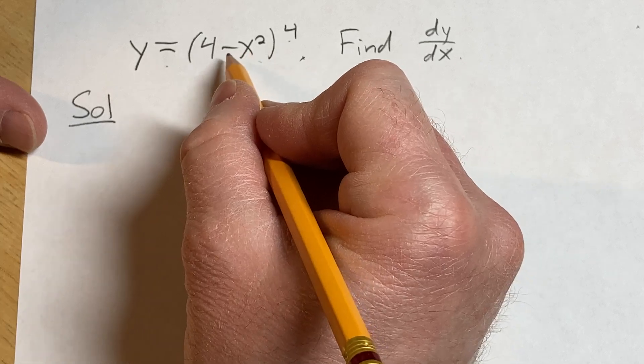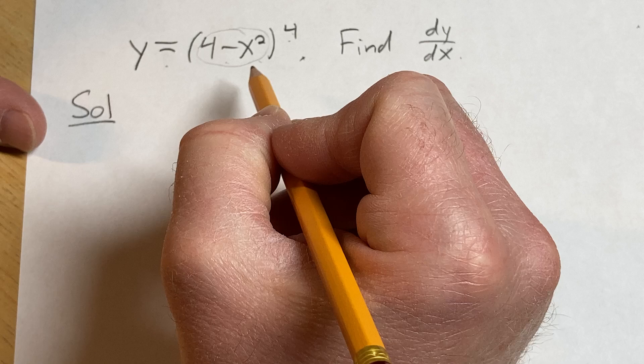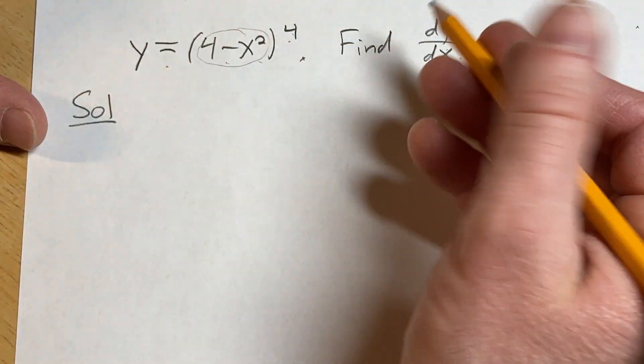We're going to use the chain rule in this problem because we have something here that is being raised to a power. Whenever you have something like this, you have an inside function, you want to use what's called the chain rule.